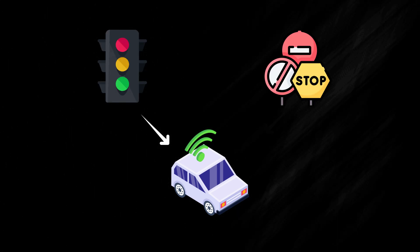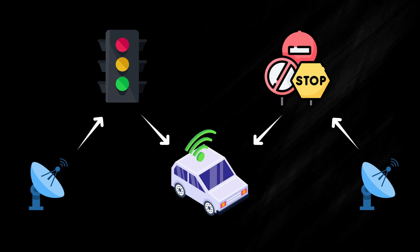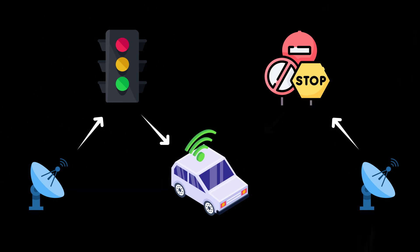Then the vehicle cannot see what's beyond that, and that's very dangerous. So the vehicle needs some support from the infrastructure on the road. We need an algorithm to merge the point cloud from the infrastructure to the vehicle, so that the vehicle has more vision on the road.